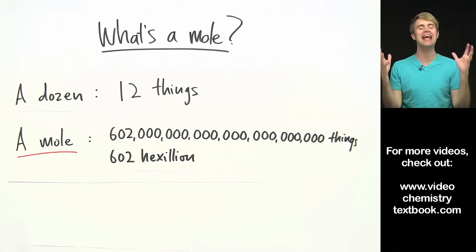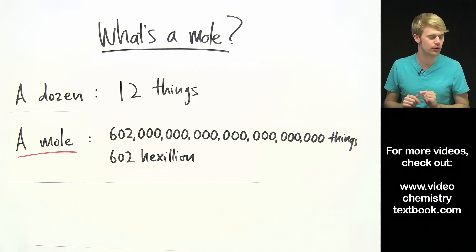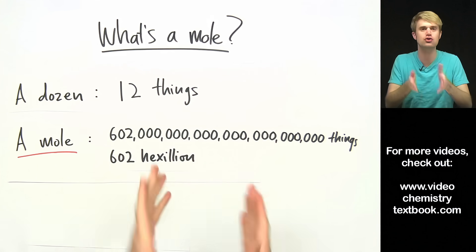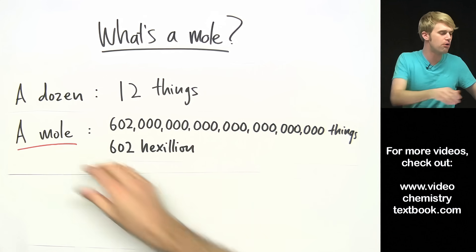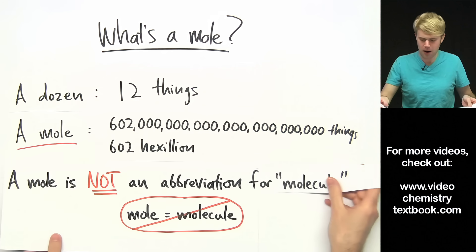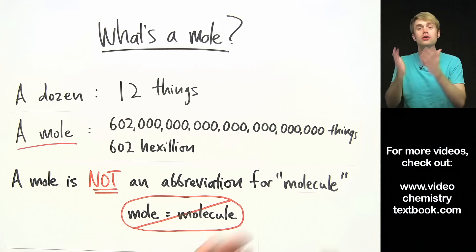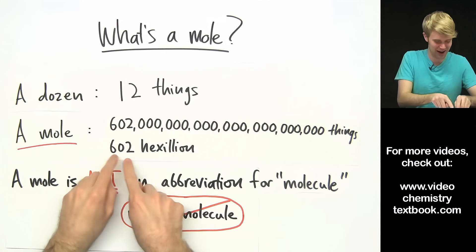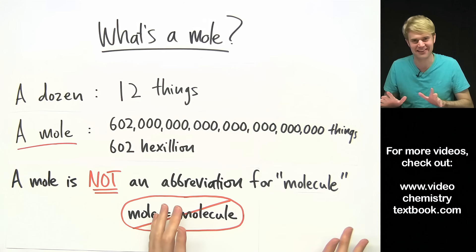Here's one thing that confuses people about moles: they forget that a mole is a name for 602 hexillion things, and they think that a mole is an abbreviation for the word molecule. So many people think this — they see 'mole' and think, 'oh, you mean molecule.' No. If I write mole, I don't mean molecule. I mean a group of 602 hexillion things.